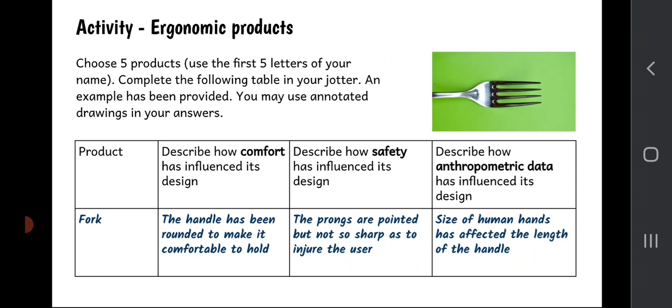OK, but in each case I want you to write down the product. I want you to describe how comfort has influenced its design, how safety has influenced its design, and how anthropometric data has influenced its design as well. So the example I've given you here is of a fork. I've said that the handle, I'm talking about comfort here, the handle has been rounded to make it comfortable to hold. I'm talking about safety in the next box and I've said that the prongs are pointed but they're not so sharp as to injure the user. So a fork is quite good at stabbing a carrot or a chip, but it's not that good at stabbing a human, so some safety has been incorporated into its design. And finally, in terms of anthropometric data, I've said here that the size of human hands has affected the length of the handle.